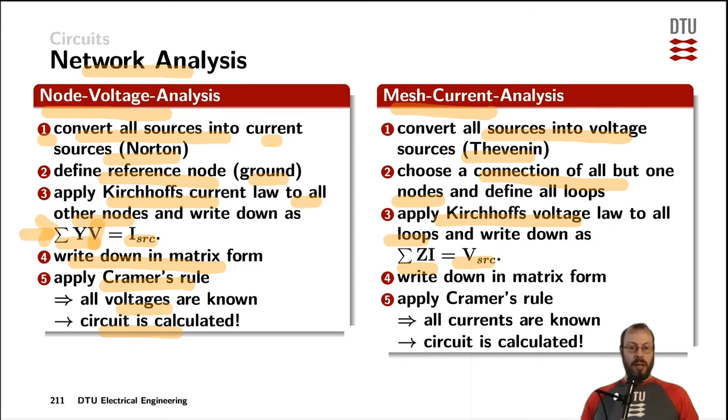You can use the same mathematical principle to write it down in a matrix form. Once again, apply Cramer's rule. That will give you the solution for the unknowns, which typically are the currents in that case. After you applied Cramer's rule, all the currents are known and the whole circuit is calculated.